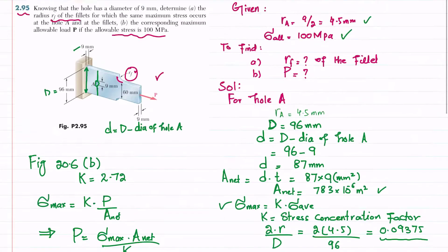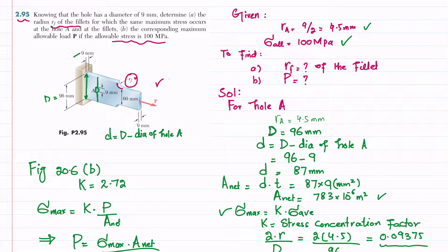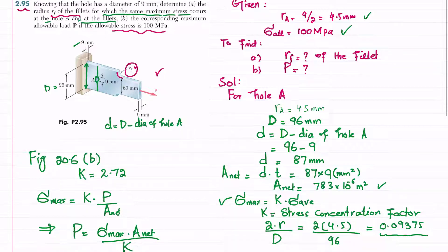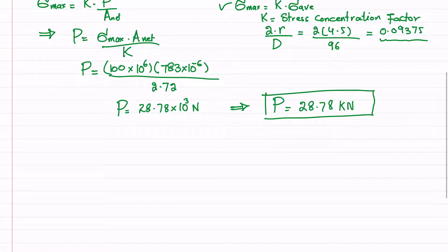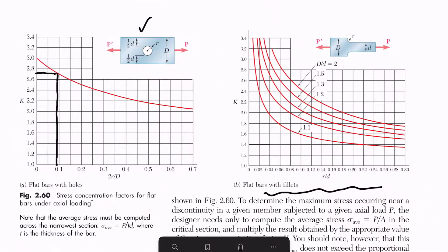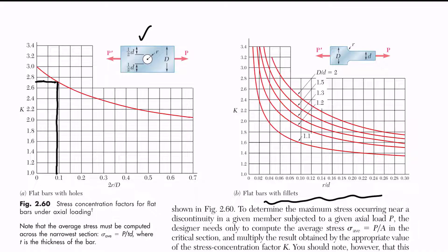Now we move to the second part. We need the radius rf of the fillet such that the same maximum stress occurs at both the hole and the fillet. We will use the same load P for finding the fillet radius.